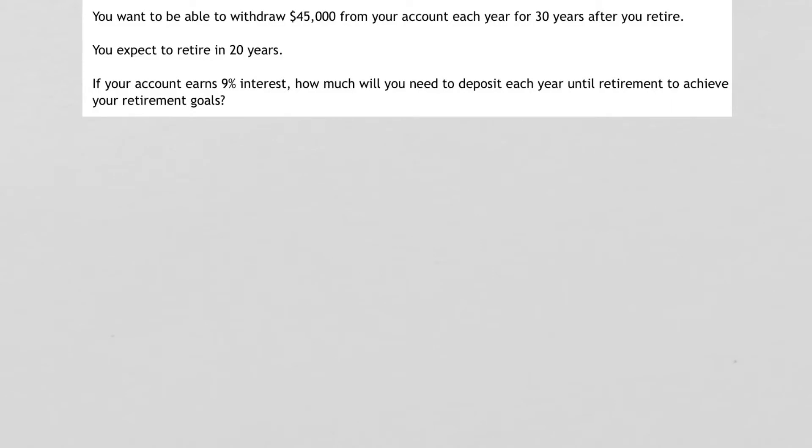This problem looks simple, but it actually has two steps. The first step is that we're withdrawing money from an account. That means payout annuity. But then the second part says we're talking about depositing money. That means a regular annuity. So this problem is solved using both our payout annuity and regular annuity formulas.